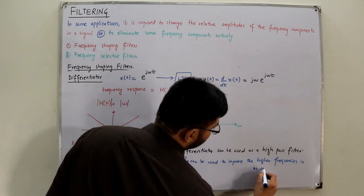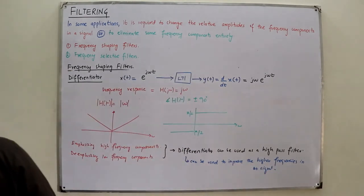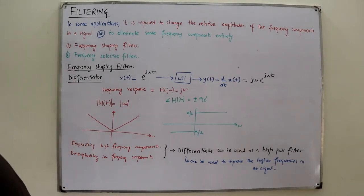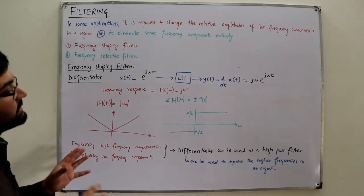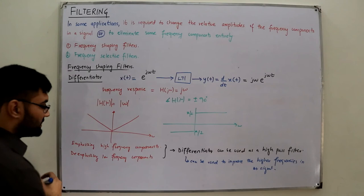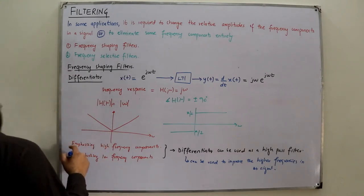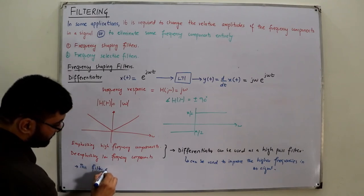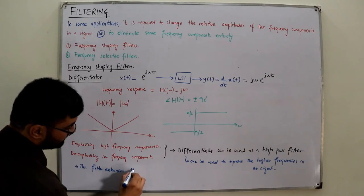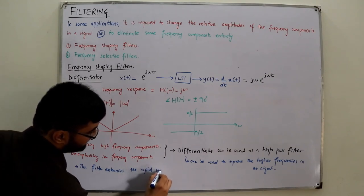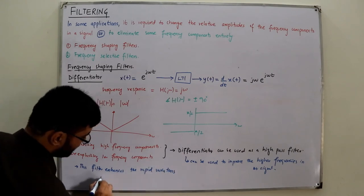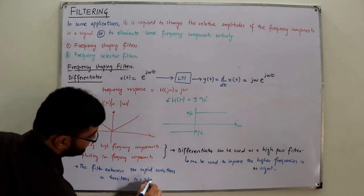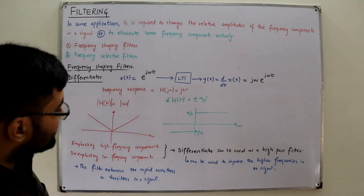The differentiator can be used to improve the higher frequencies in a signal. This filter also enhances the rapid variations or transitions in a signal — and rapid variations correspond again to the higher frequency components.